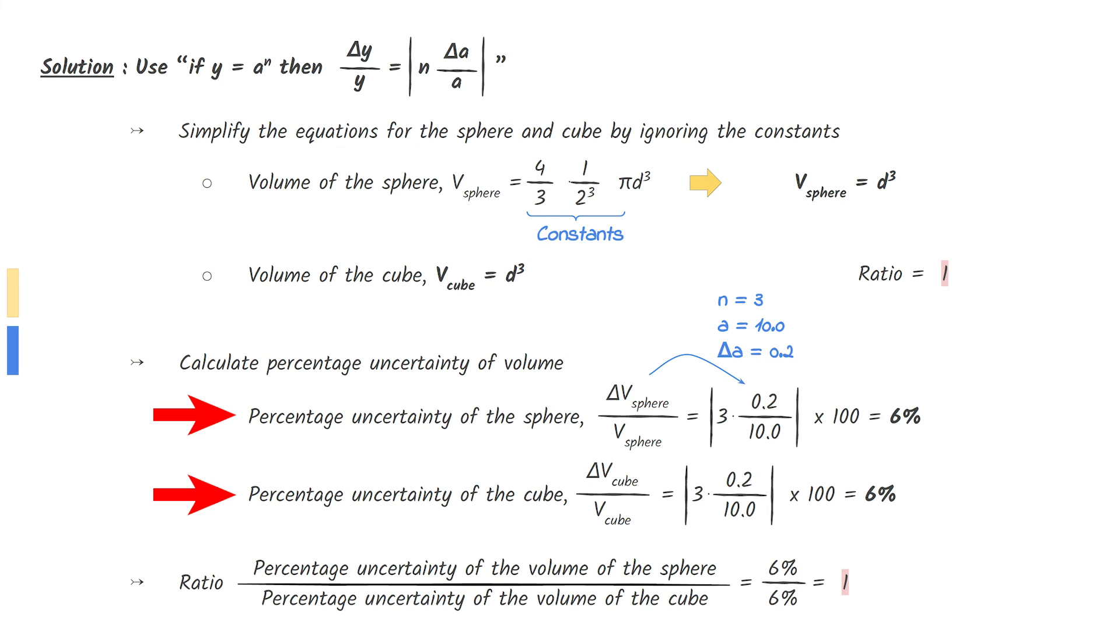However, here is the mathematical way of solving this question. By using the equation given to us in the data booklet, we can find each of the percentage uncertainties. Divide them together to get your answer. Good luck!